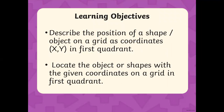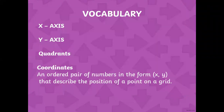By the end of this lesson you should be able to describe the position of a shape or an object on a grid as coordinates (x, y) in the first quadrant, and you should be able to locate the object or shapes with the given coordinates on a grid in the first quadrant. You might be thinking: what are coordinates? What is a first quadrant? So let's first learn some new vocabulary words.